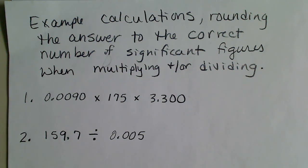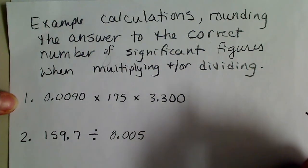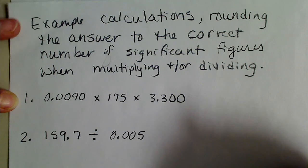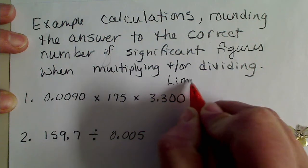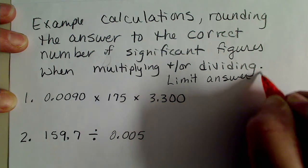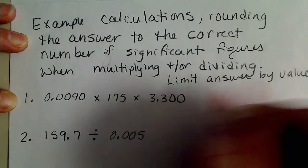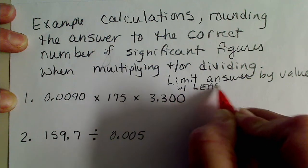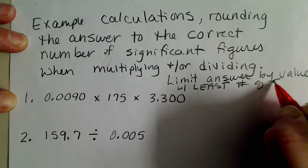In this video we're going to practice doing some multiplication and division calculations with measured values and reporting our answer to the correct number of significant figures. The rule for multiplication and division is that the value with the least number of significant figures will limit our answer — limit the answer by the value with the least number of significant figures.